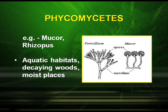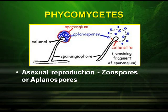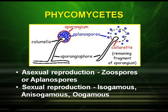Phycomycetes — example, Mucor and Rhizopus. They are found in aquatic habitats, decaying wood, and moist places. Their mycelium is aseptate and coenocytic. Asexual reproduction is by zoospores or aplanospores. Sexual reproduction may be isogamous, anisogamous, or oogamous.